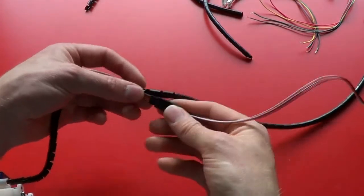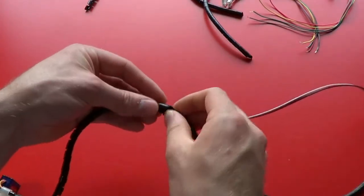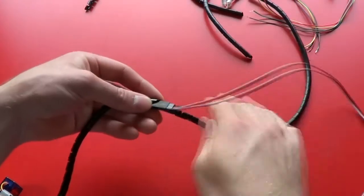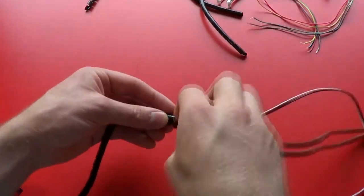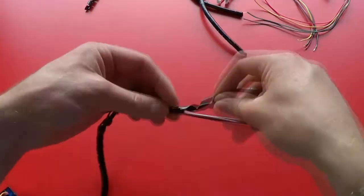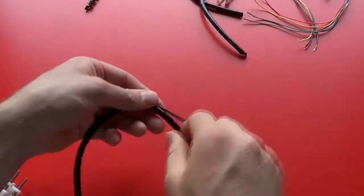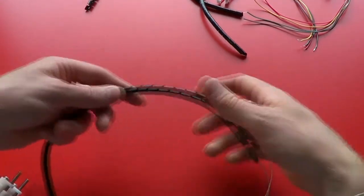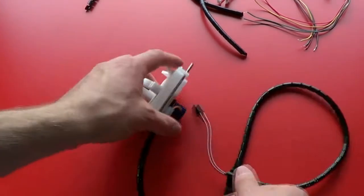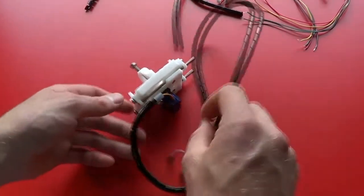When you come to the connector, just keep on wrapping and the spiral wrap will expand to go over the oval connector. There we go. That's the servo lead fully wrapped.